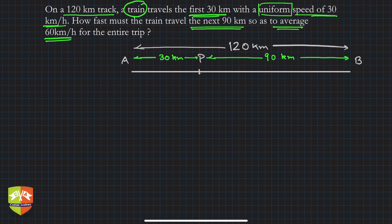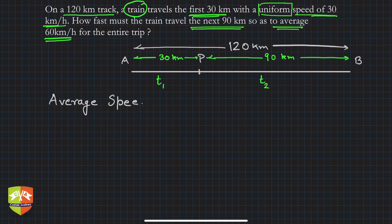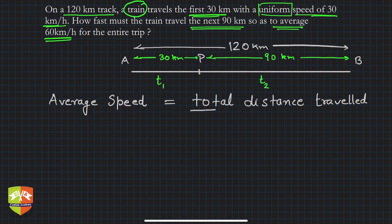Now let's say the time taken for the first journey AP is t1 hours, and the second journey PB takes t2 hours — we'll be working only in kilometers and hours. The average speed formula: average speed of any body is total distance traveled — mind the word distance, not displacement — divided by total time taken. Since we are talking distance, we take the total length of the path.